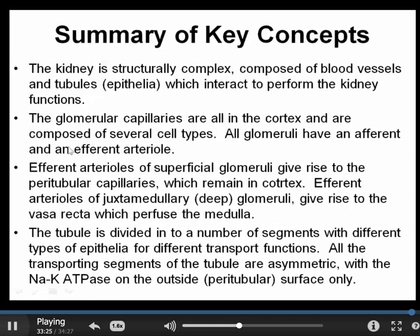So we've talked today about the structure of the kidney: the two basic units, the blood vessels and the tubules, which come together and interact to perform the functions of the kidney. We talked about the structure of the glomerulus and the unusual vascular supply where there's an afferent and an efferent arteriole — unique in capillaries. We talked about how the efferent arterioles of the cortical glomeruli give rise to peritubular capillaries located entirely in the cortex, while the blood supply of the deep juxtamedullary glomeruli gives rise to vasa recta that go deep into the medulla. And we've begun to talk about the tubular organization and how the different segments are morphologically different.